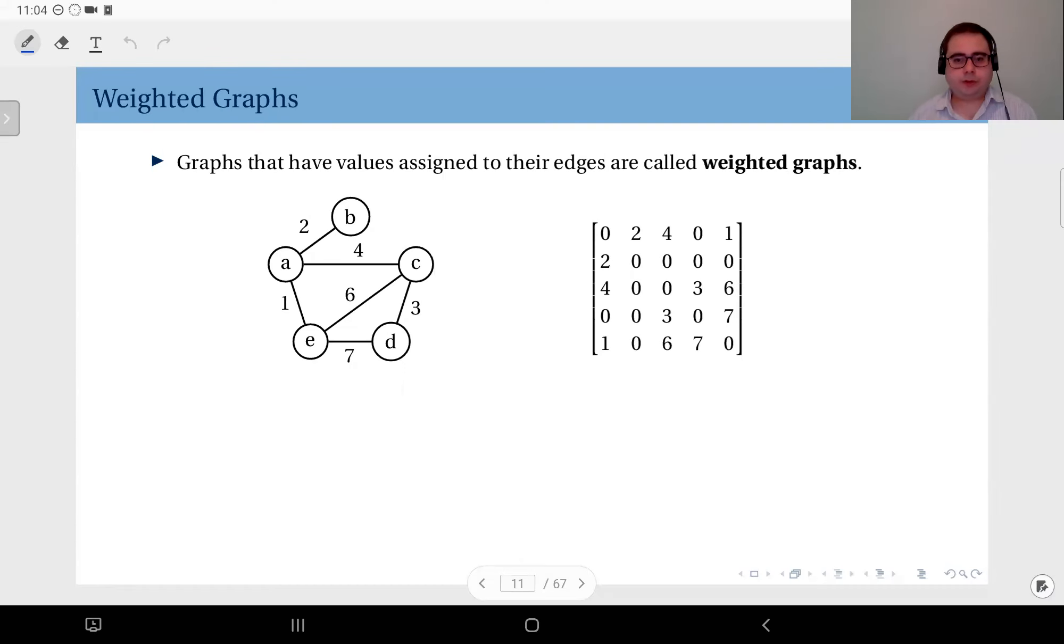Up to this point we have discussed graphs where we just have the vertices and the edges connecting them. Now we'll talk about weighted graphs where we assign weights to each edge, so that the characteristics of the edges between any pair of vertices might be different.